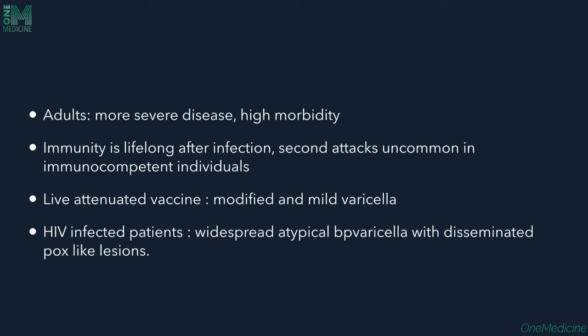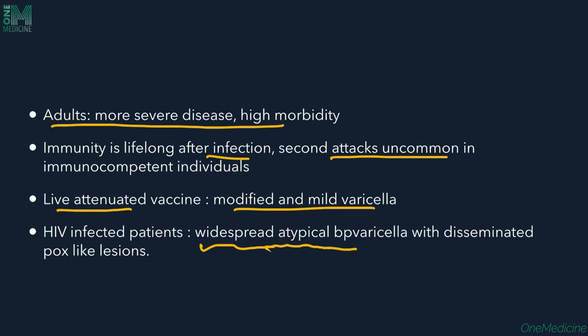Adults experience more severe disease with higher morbidity and mortality compared to children. Immunity is lifelong after infection; secondary attacks are uncommon in immunocompetent patients but can occur in immunocompromised individuals. A live attenuated vaccine is available, and modified mild Varicella can occur due to the vaccine. In HIV-infected patients, typical widespread atypical Varicella and disseminated pox-like lesions can be seen.